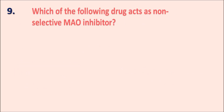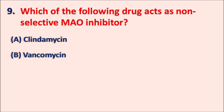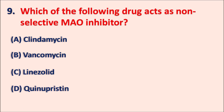Question nine: which of the following drugs acts as a non-selective MAO inhibitor? Options are: A) clindamycin, B) vancomycin, C) linezolid, D) quinupristin. One of these antibiotics has an additional MAO inhibitory activity — what is that antibiotic?